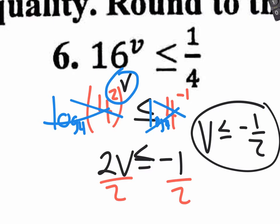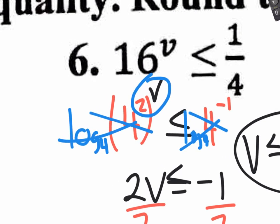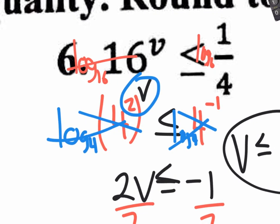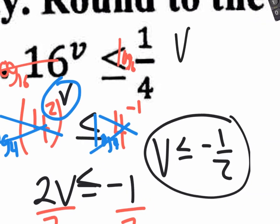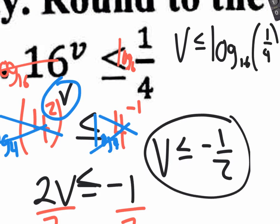Could this have been done with the calculator? Absolutely. Right at the beginning, you could have said: I want to get rid of the base 16 and make that v drop down. Apply a log base 16. Put log base 16 on both sides — that will cancel out. So you would really have v is less than or equal to log base 16 of 1/4. You can actually type that into your Casio — log base 16, and inside the parentheses put 1 divided by 4 — and it will give you negative 0.5 anyway.